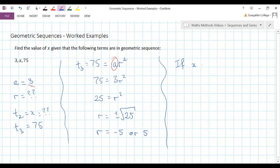If for this sequence the common ratio is positive 5, well then x is going to be a times r, which is 3 times 5, or 15.